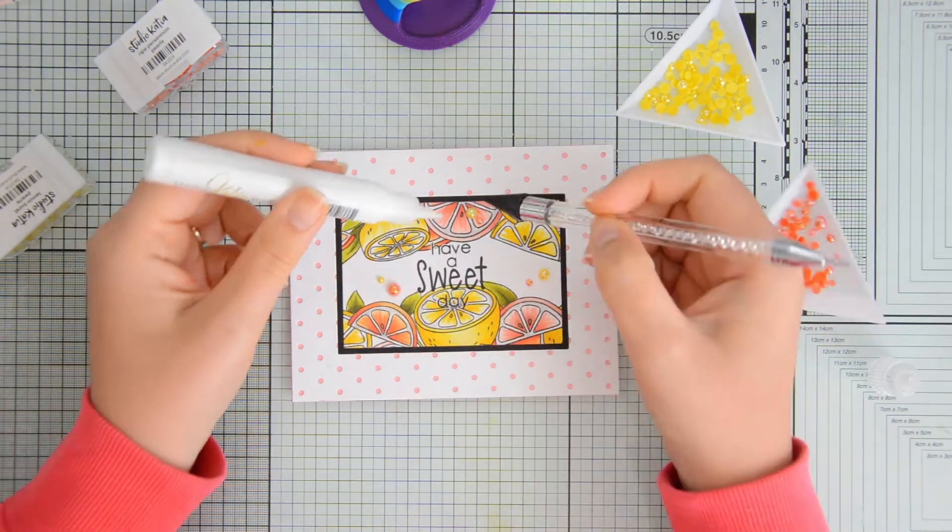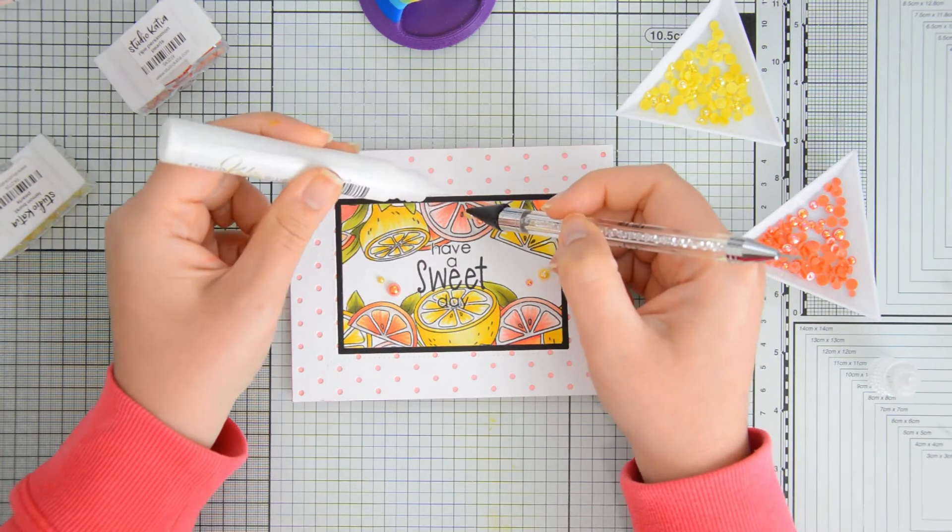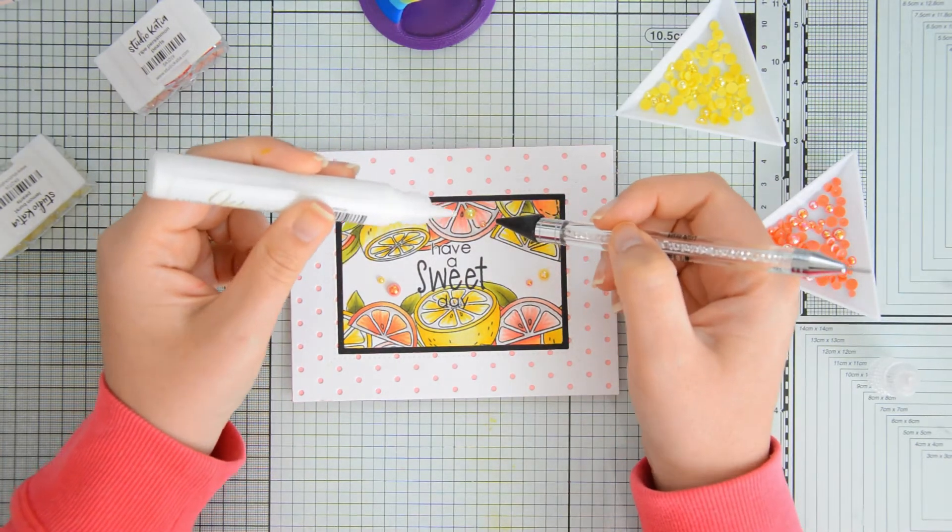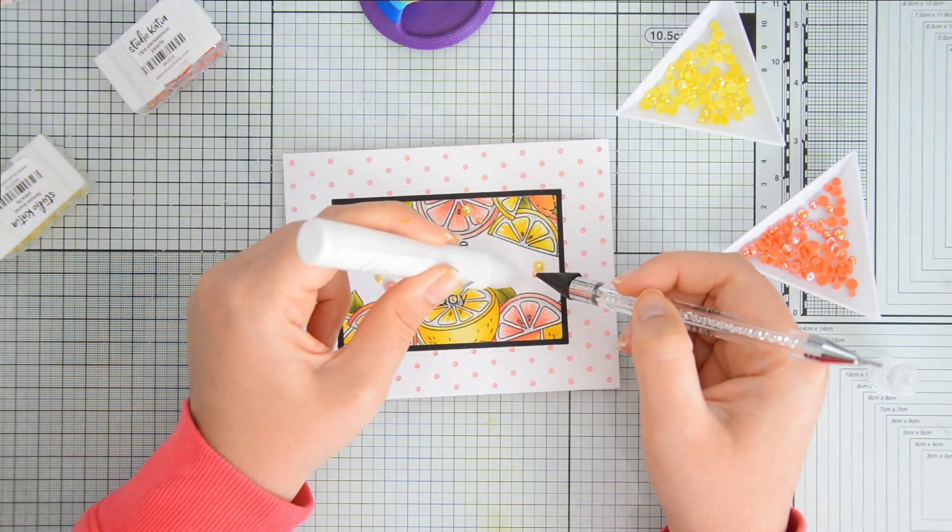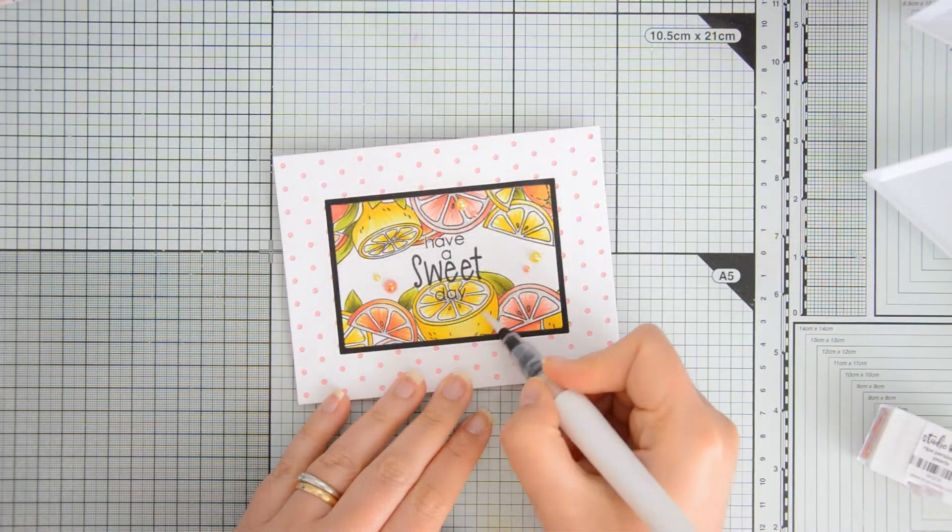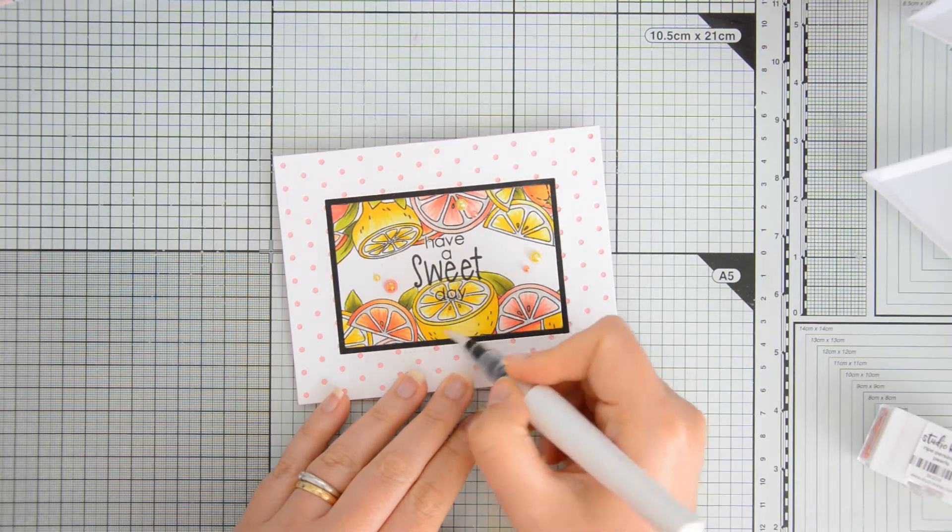I obviously had to add some embellishments and today I decided to use some pearls. These ones are lemon burst pearls and ripe persimmon pearls, which I'm gluing down with my Studio Katia liquid glue and an embellishment wand.